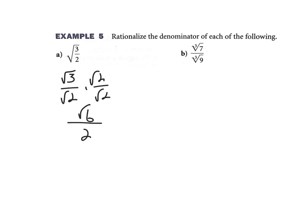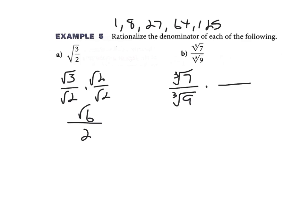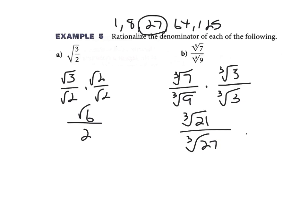The second one is tougher — cube root of 7 over cube root of 9. I've got to find a cube number that 9 goes into. The perfect cubes are 1, 8, 27, 64, 125. I know 9 goes into 27, and it goes in 3 times. So I multiply top and bottom by cube root of 3. That gives cube root of 27 on the bottom, which is 3, and cube root of 21 on the top. I'll show you an easier way to do this in class tomorrow.